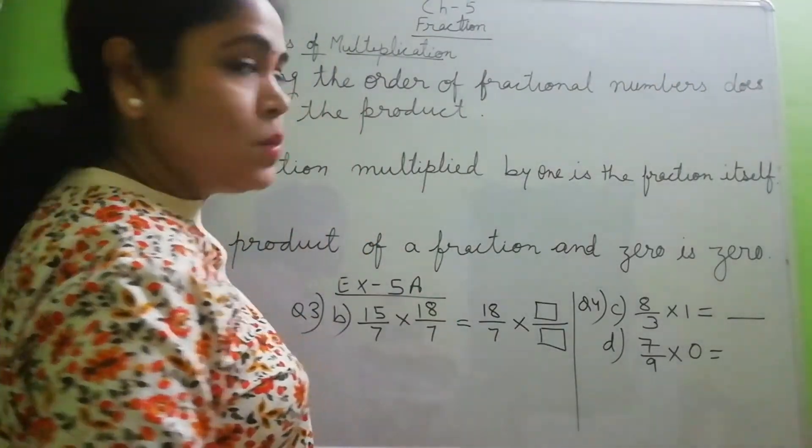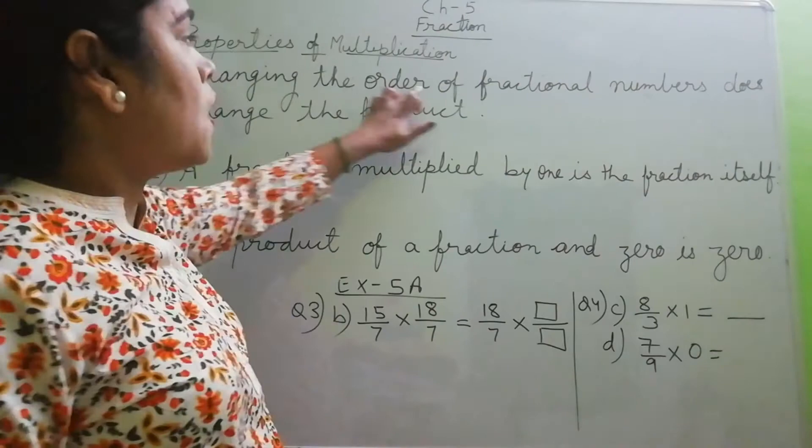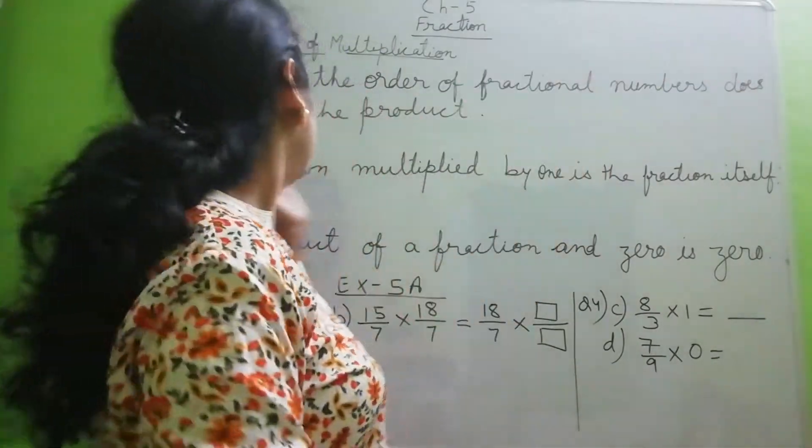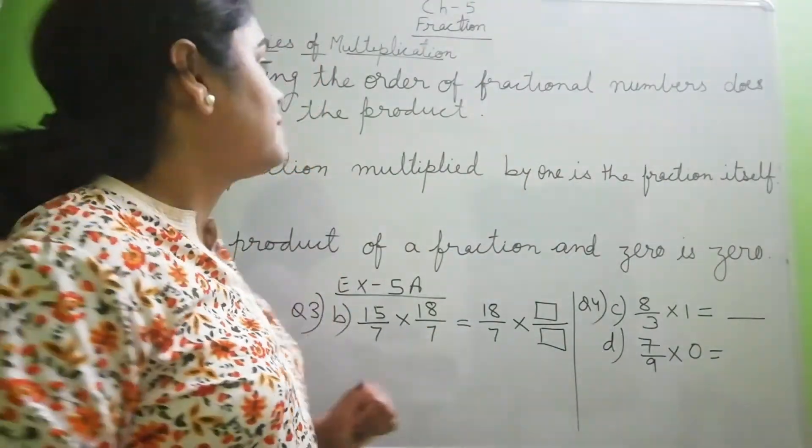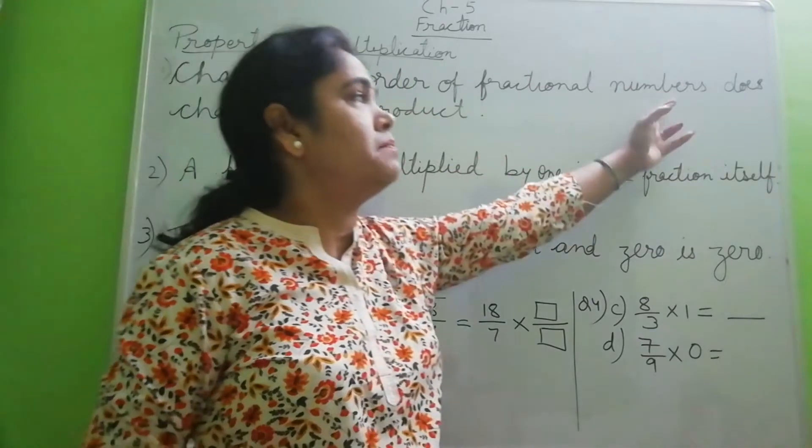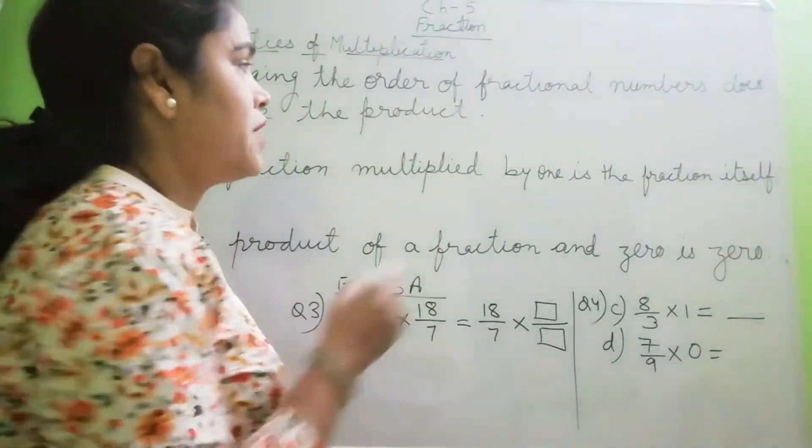First property: as you have already learned that changing the order of numbers does not change the product. Similarly, changing the order of fractional numbers does not change the product. For example,